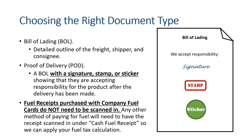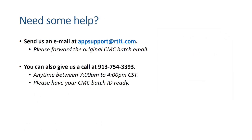When choosing the right document type, be sure not to confuse a bill of lading with a proof of delivery. A bill of lading (BOL) is a detailed outline of the freight, shipper, and consignee. A proof of delivery (POD) is a BOL with a signature, stamp, or sticker showing that they are accepting responsibility for the product after delivery. Fuel receipts purchased with company fuel cards do not need to be scanned in; any other method of paying for fuel will need the receipt scanned under Cash Fuel Receipt so we can apply your fuel tax calculation. If you need help using the app, send an email to appsupport@rti1.com or call 913-754-3393.